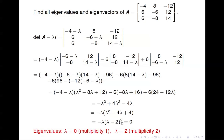Since it's (lambda minus 2) squared, the eigenvalue 2 actually occurs twice — it's a solution twice. So we say lambda equals 2 has multiplicity 2, meaning it occurs two times. Lambda equals 0 only occurs once, so it has multiplicity 1.